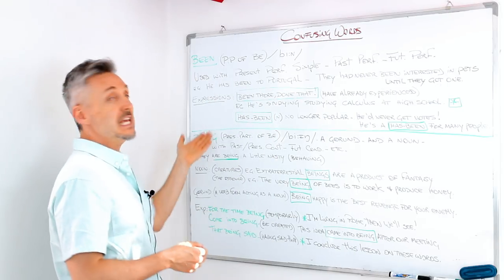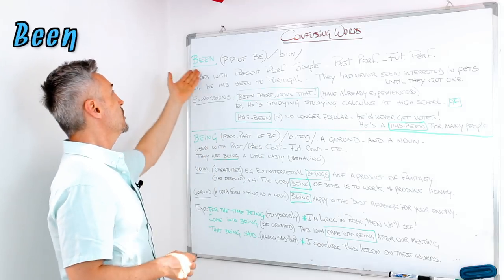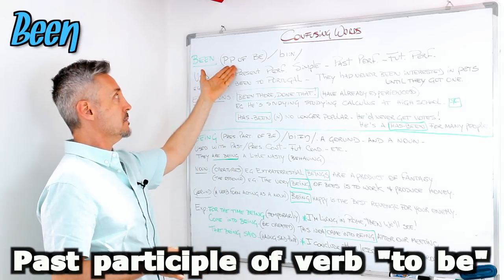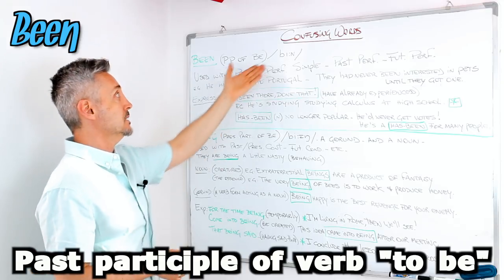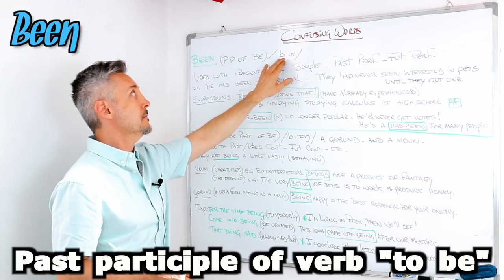Being and being. So being is the past participle of the verb to be and is pronounced as this: been.